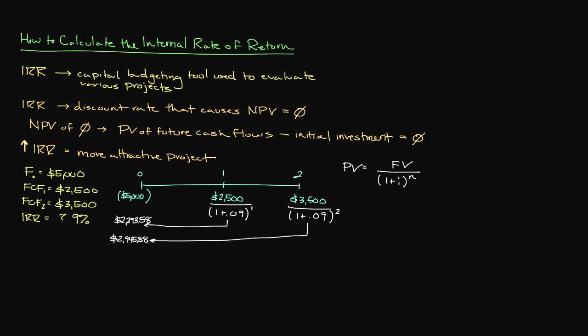Next, we add both figures together to get $5,239.46. Since our discounted future cash flows are $5,239.46 and our investment is $5,000, an IRR of 9% gives us an NPV of $239.46, which of course is greater than zero. A positive NPV tells us that we need a higher discount rate to lower the present value of our future cash flows. So let's select a higher discount rate.